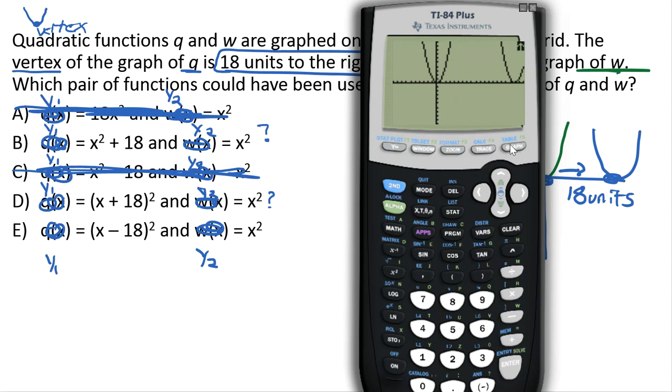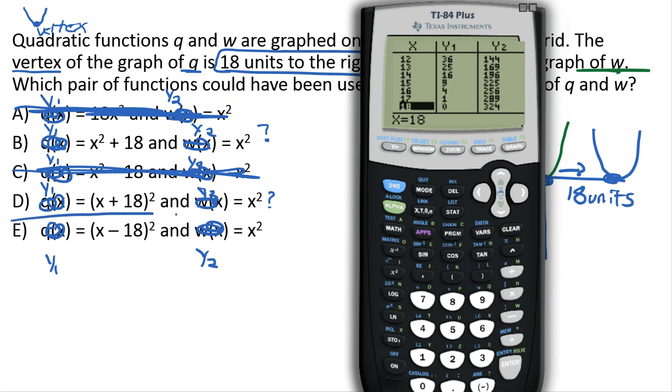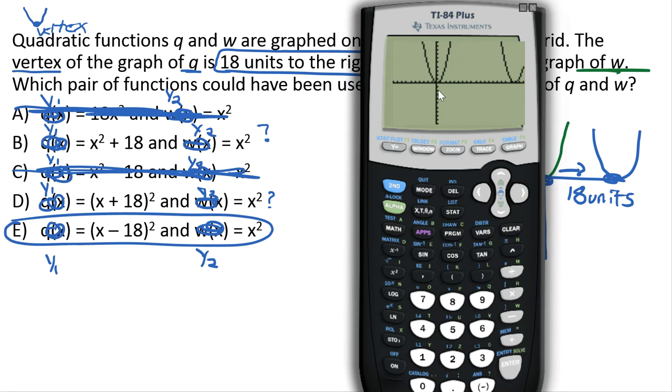Let's go to our table, second graph. Let's make absolutely certain. So the first graph is (0, 0), and our y1 ought to be (18, 0) if it's 18 units to the right. We look at it. We notice it's (18, 0). So that means that (x minus 18) squared must be the correct answer. It's 18 units to the right of y equals x squared.